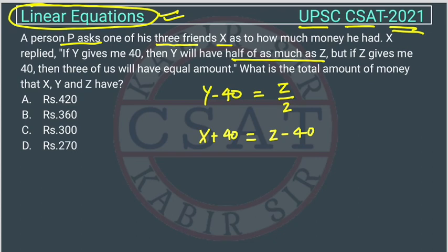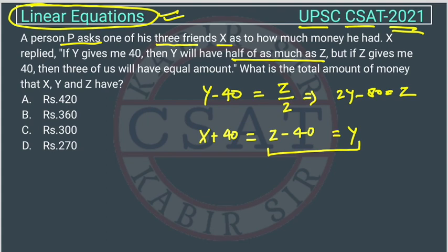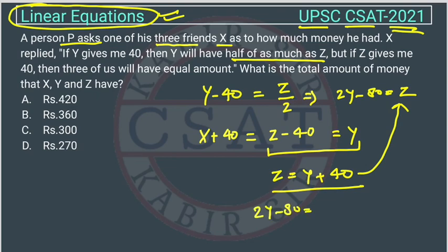After Z gives 40, all three will have equal amounts, so this equals Y. From here the equation becomes: 2y minus 80 is equal to z. Now we take this equation and put the value of z. From the condition, z equals y plus 40. Substituting this value, we get 2y minus 80 equals y plus 40.